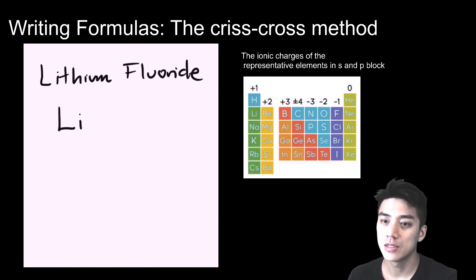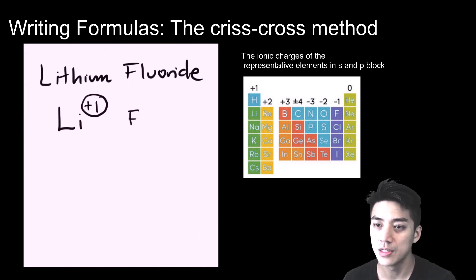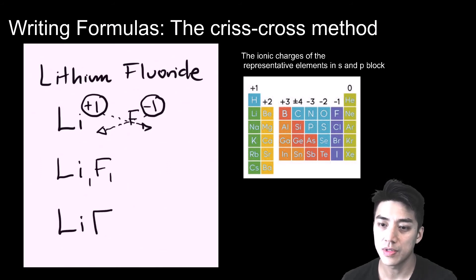Lithium fluoride: start off the symbol, lithium is Li, charge is plus one. Fluoride is fluorine, charge is negative one. Criss-cross the charges, write it out, Li one F one, omit the ones so we got lithium fluoride as LiF.